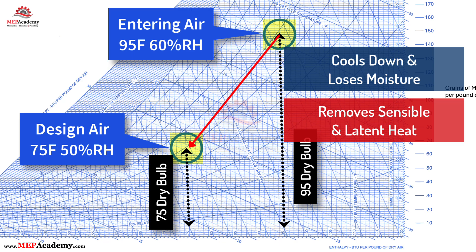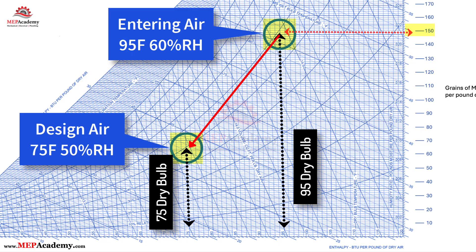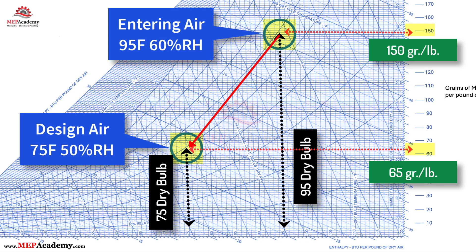At 95 degrees Fahrenheit and 60% relative humidity, the humidity ratio is about 150 grains per pound. At 75 degrees Fahrenheit and 50% relative humidity, it's about 65 grains per pound. So the cooling coil removes 85 grains of moisture per pound of dry air. This is a simple explanation of how the psychrometric chart is used to solve problems and determine what happens to the air at various conditions.